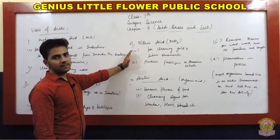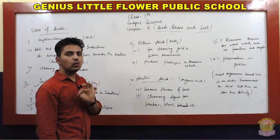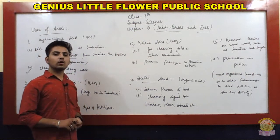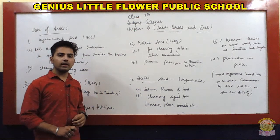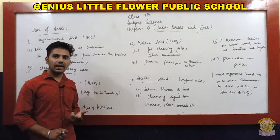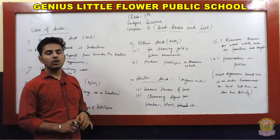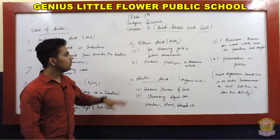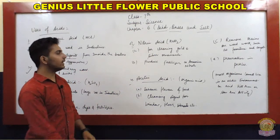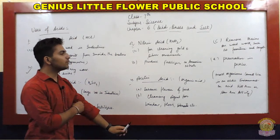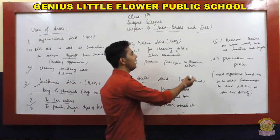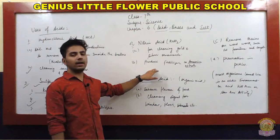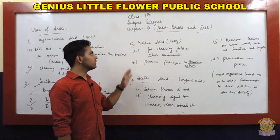The next acid is nitric acid, HNO3. Its first use is that jewelers use nitric acid for cleaning gold and silver ornaments. Its second use is in producing fertilizers such as ammonium nitrate. Ammonium nitrate is a fertilizer compound produced using nitric acid.